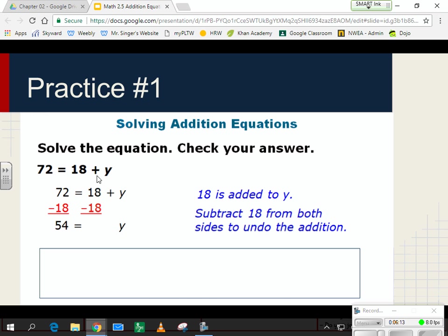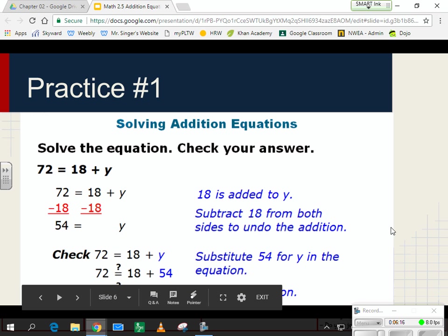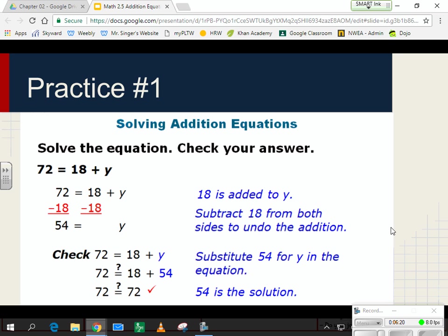And remember, you can always check your work to see if you're right just by plugging and chugging. So if I plug 54 back in for y, I'll see that 18 plus 54 gives us 72. No guess and check, no trying different numbers. Just simply by subtracting away on both sides, you'll get your variable alone of y.